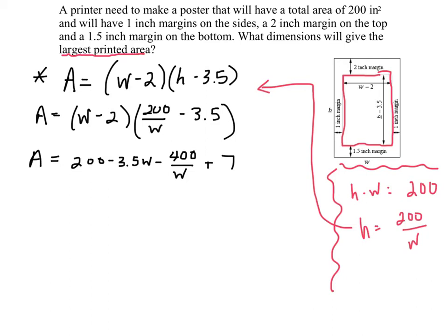Area becomes 200 minus 3.5w minus 400 over w plus 7. As we find the derivative here, let's do that, because we're trying to maximize. We want to know where the derivative is 0. So dA/dW. The derivative of 200 is gone. The derivative of negative 3.5w is just negative 3.5.